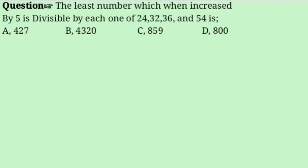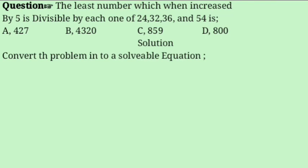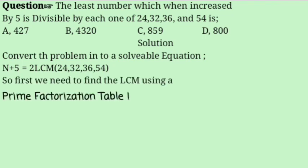New question: the least number which, when increased by 5, is divisible by each of 24, 32, 36, and 54. We convert this into a solvable equation: N plus 5 equals some multiple of the LCM of 24, 32, 36, and 54. We compute the LCM using a prime factorization table.